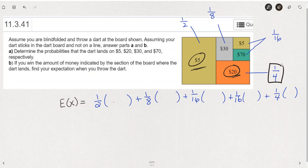So the probability that it lands in this $5 mark is 1 in 2. The probability that it lands here on the $20 orange square is 1 in 4, and so on. We can see that the $30 is 1 in 8, and then the $70 and $5 are each 1 in 16.